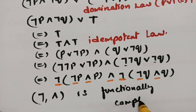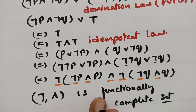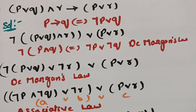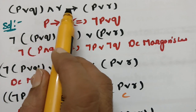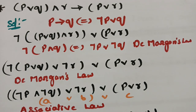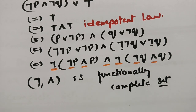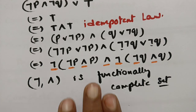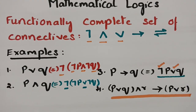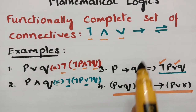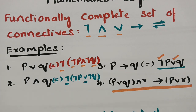So in that statement — which originally had disjunction, conjunction, and implication — I expressed it as an equivalent statement in terms of negation and conjunction only. That set {negation, conjunction} is the functionally complete set. Whichever connectives are there, if you can express the equivalent statement in terms of negation∧conjunction or negation∨disjunction, that set is called the functionally complete set.